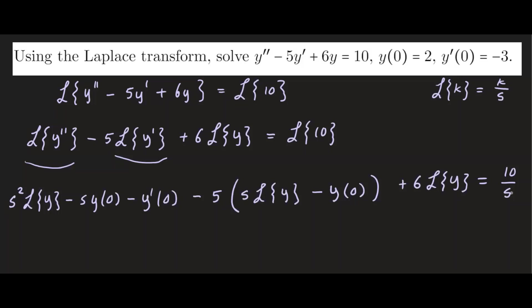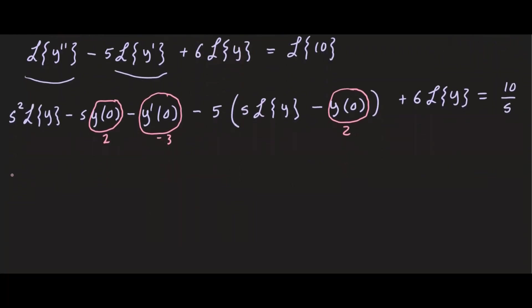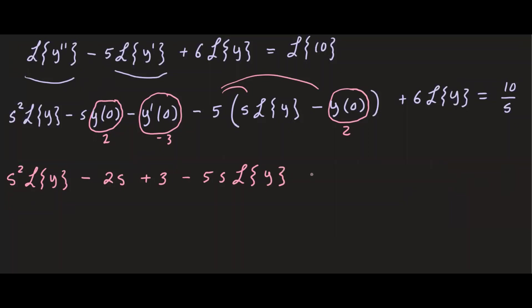The next step is to plug in the initial conditions and factor out the terms involving the Laplace transform of y. Plugging in y(0) = 2 and y'(0) = -3, we get: s squared times the Laplace transform of y minus 2s plus 3, minus 5s times the Laplace transform of y plus 10, plus 6 times the Laplace transform of y equals 10 over s.